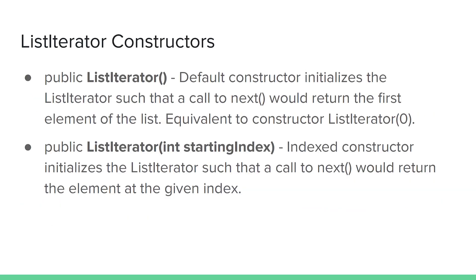A ListIterator typically has two constructors: a default constructor and an indexed constructor. The default constructor initializes a ListIterator similarly to a basic iterator — it's queued up in front of the first element of the list, such that a call to next would return the first element. The indexed constructor allows you to start a ListIterator at any position within the list, and a call to next immediately after would return the element at the given index.